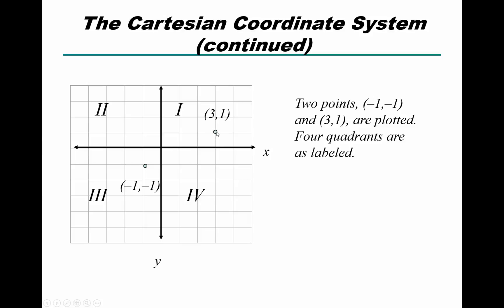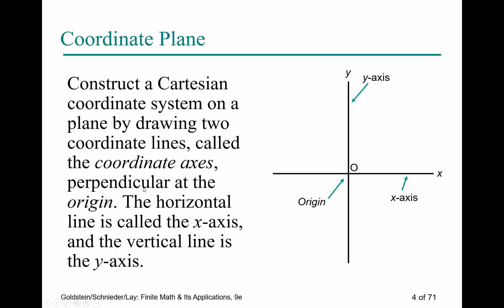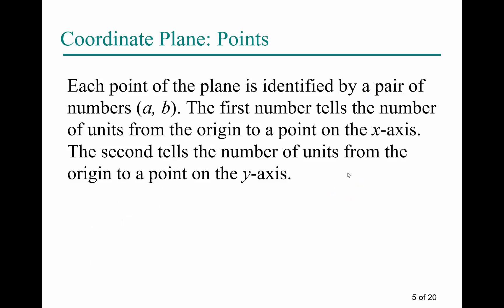When graphing, always start with x and then go to y. To plot the point (3, 1), go right 3 then up 1. To plot (-1, -1), go left 1 on the x-axis then down 1 on the y-axis. Remember: the vertical axis is the y-axis, the horizontal is the x-axis, and the origin is the ordered pair (0, 0).